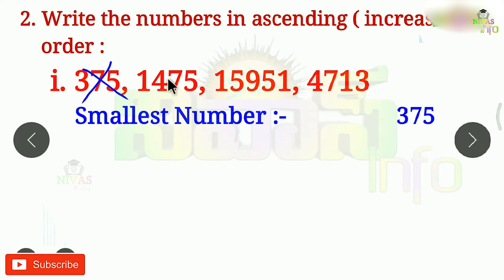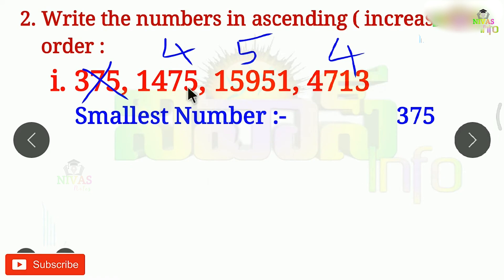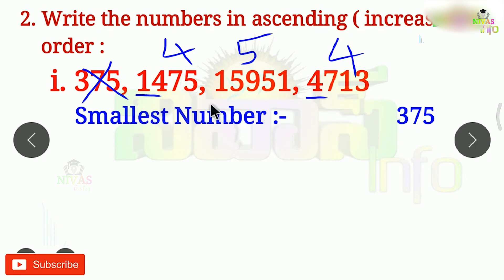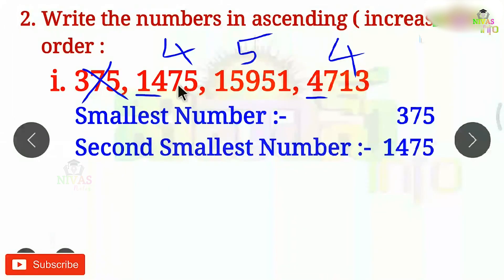Here is a 4-digit number and here is a 5-digit number. For the 4-digit numbers, the smallest is determined by comparing digits. So, 1 is smaller than 4. The second smallest number is 1475.